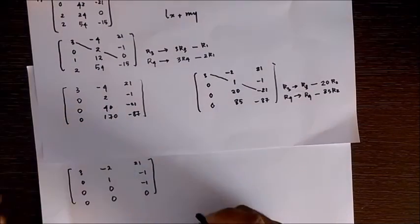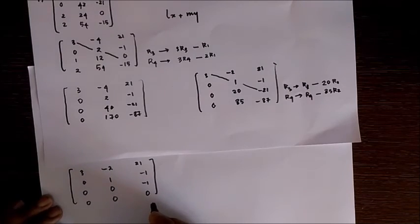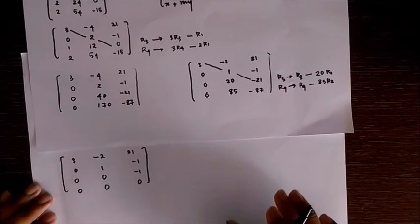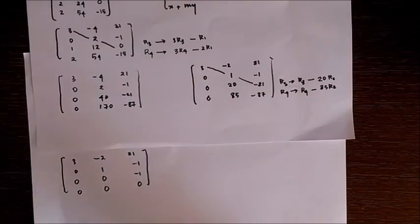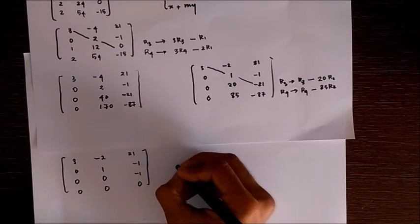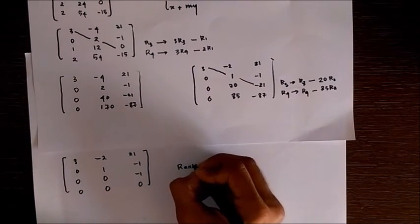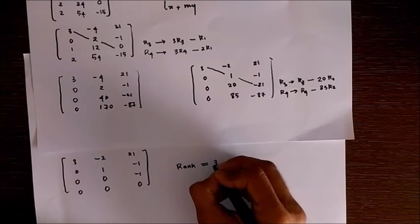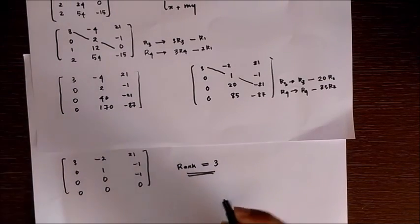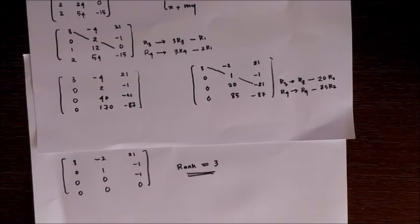The last row is completely zero, which is a zero row. We get the rank of this matrix equal to 3. This is how you find the rank of a given matrix.